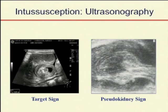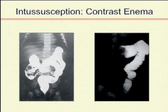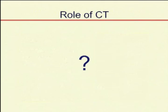Contrast enema can be a very good study to diagnose this, and as we'll get into, to treat this as well. It can be a reliable test if you don't have a reliable ultrasound. The role of CT — in our hospital there really isn't much of a role. If we see this on CT, chances are we're working up a child for something else, like appendicitis. But it certainly is a reliable test, and that becomes more common when talking about older children and adults.